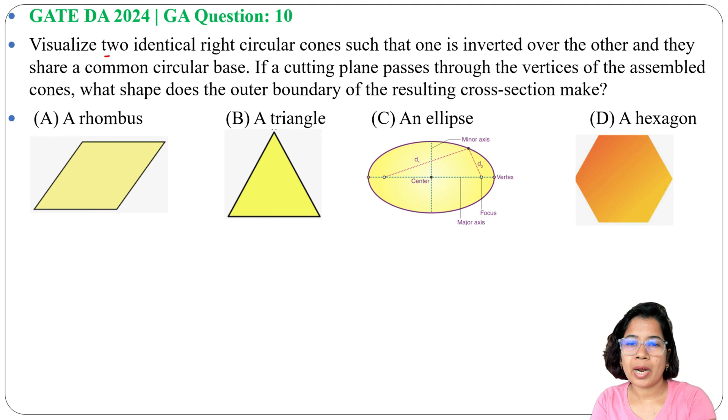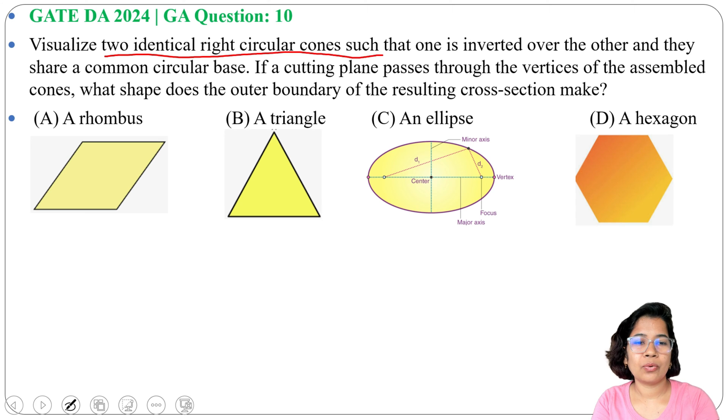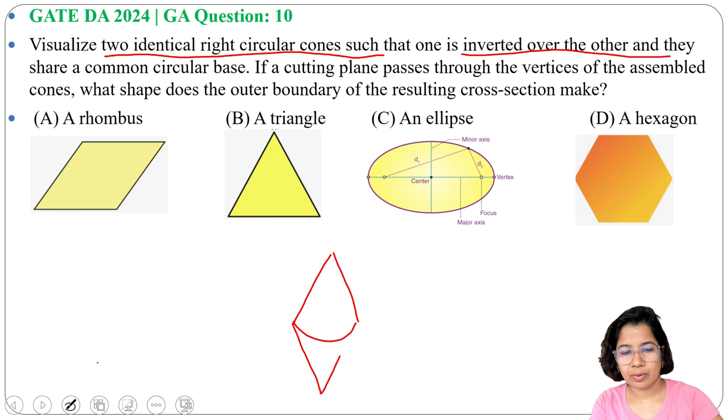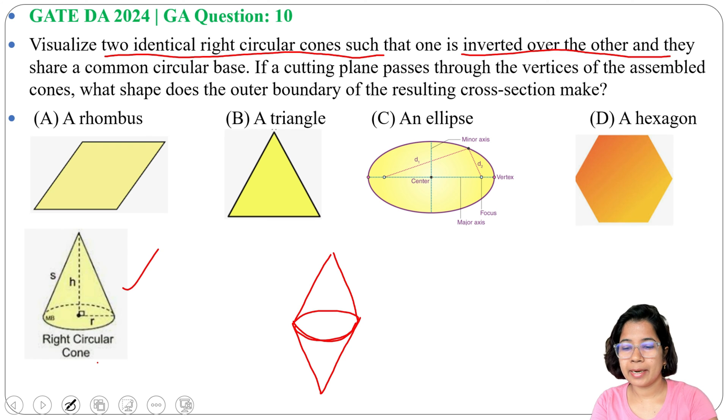Two identical right circular cones such that one is inverted over the other. So this is a right circular cone, and we have another one inverted over it like this.